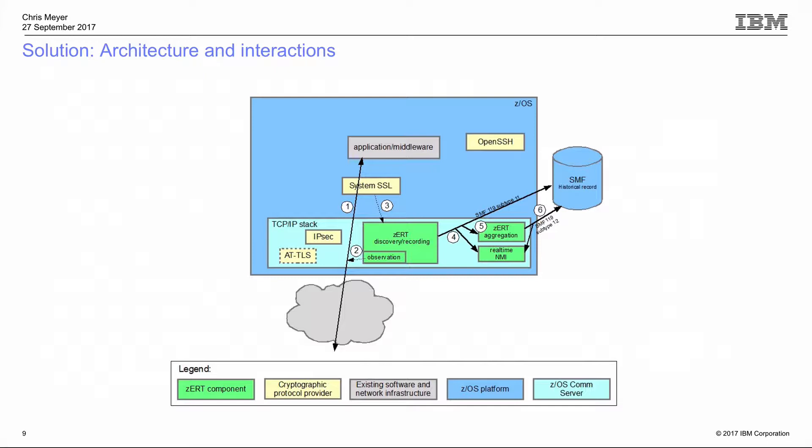Once this information is recorded in memory, the stack writes it out either directly to SMF or to a real-time NMI service, depending on your configuration. It also sends that event to the aggregation engine inside the stack. The aggregation engine collects that information and, when the SMF interval fires, writes out the subtype 12 records for all the security sessions it knows about.